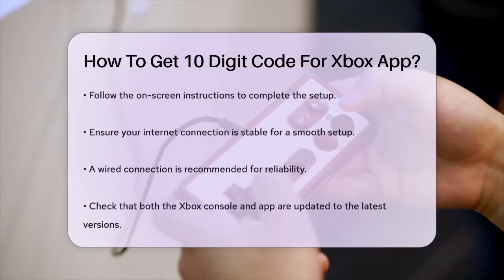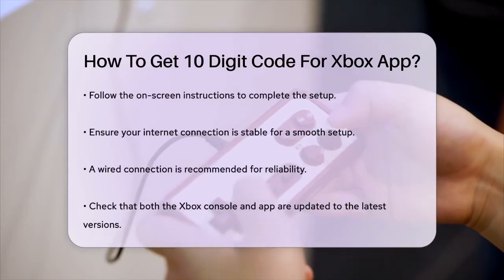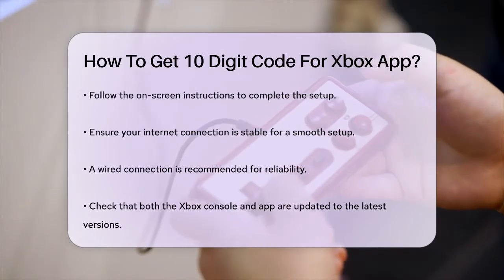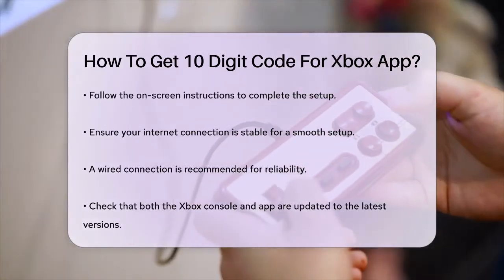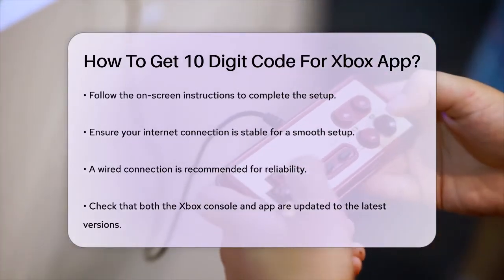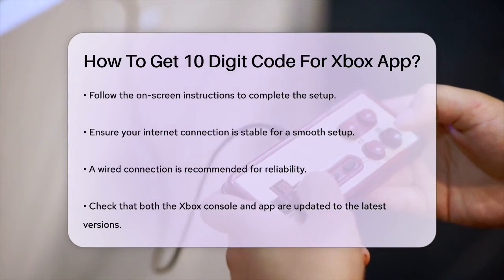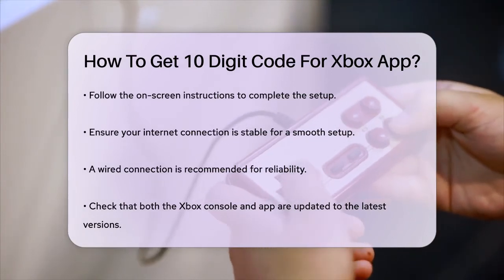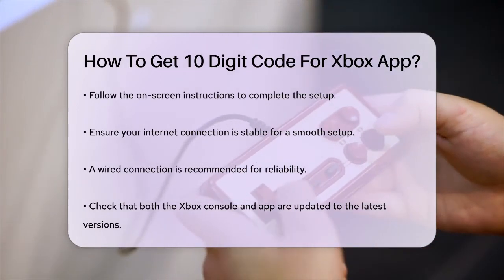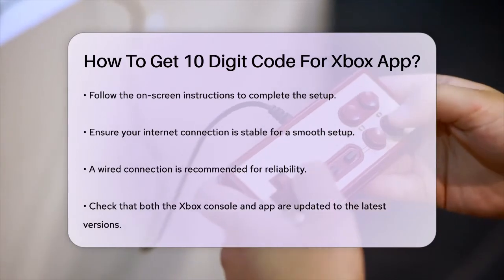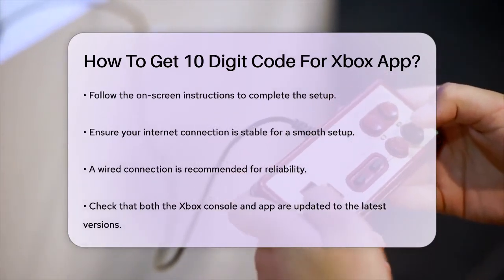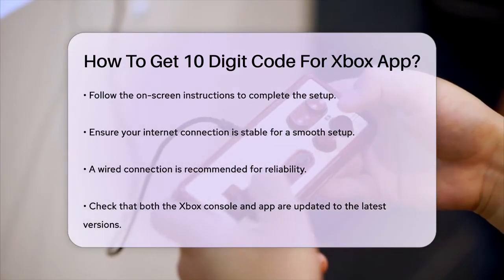Follow the on-screen instructions to complete the setup. If you're having trouble, make sure your internet connection is stable. A wired connection is usually more reliable than Wi-Fi. Also, ensure that both your Xbox console and the Xbox app are updated to the latest versions. Sometimes the app might not connect due to a slow internet connection or outdated software.